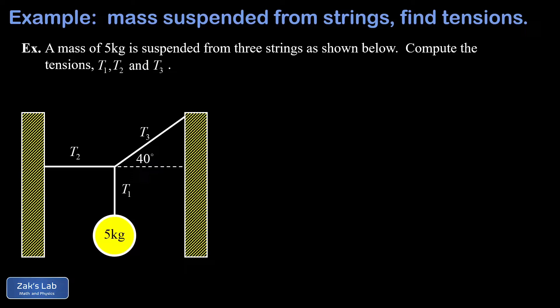Because nothing is moving, the acceleration is zero everywhere. The sum of the forces on any piece of the system vanishes, and we're going to start with a force analysis on the five kilogram mass because that immediately gives us T1.